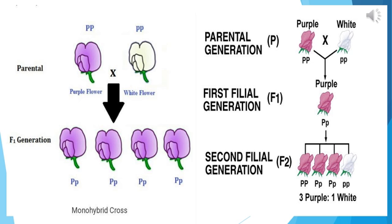Mendel's experiment tested this by getting both the parental plants and the F1 tall plants to reproduce by self-pollination. The progeny of parental plants are of course all tall. However, the second generation, or F2 progeny, of the F1 tall plants are not all tall. Instead, one quarter of them are short. This indicates that both the tallness and shortness traits were inherited in the F1 plants, but only the tallness trait was expressed. Thus, two copies of the traits are inherited in each sexually reproducing organism.